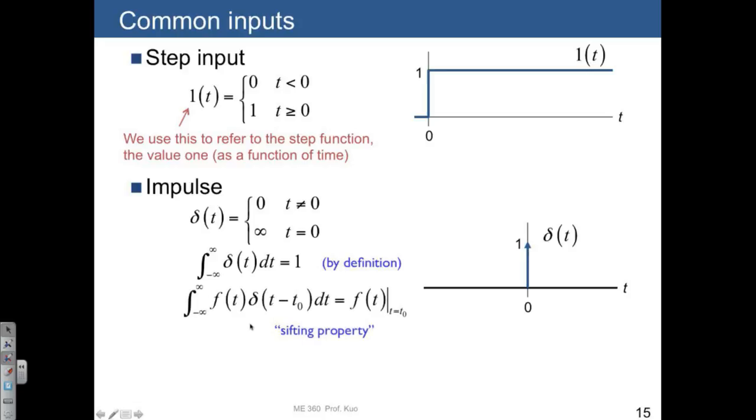There's another property of the impulse function that we call the sifting property. And the sifting property is described like this. You have an impulse function. It's been shifted in time by some amount. In this case, when you shift t minus t0, that's the same thing as taking the impulse and shifting it to the right by some amount t0. If you have this impulse and you multiply it by any function f of t, and then you multiply these together, you integrate them, and what you end up with is just f of t evaluated at time t0.